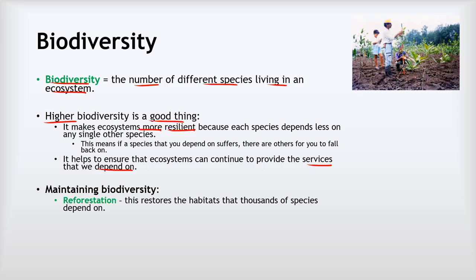There are a couple of different things we can do to promote and improve biodiversity. Thing number one is reforestation. This is about planting trees in areas that have previously had their tree cover removed, and this restores the habitats that thousands of species depend on. Once the trees return, all of the other living things—plants, animals, bacteria, fungi—will all return as well. Reforestation is one of the most important things we can do to improve biodiversity.